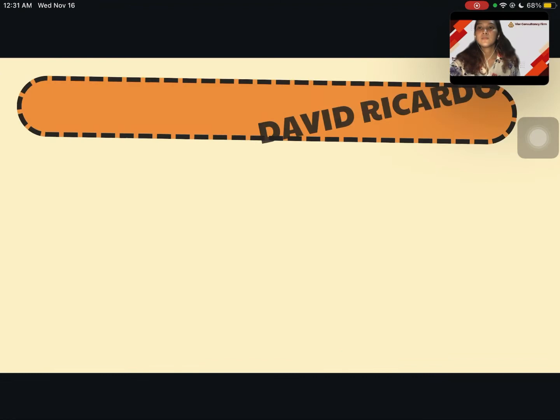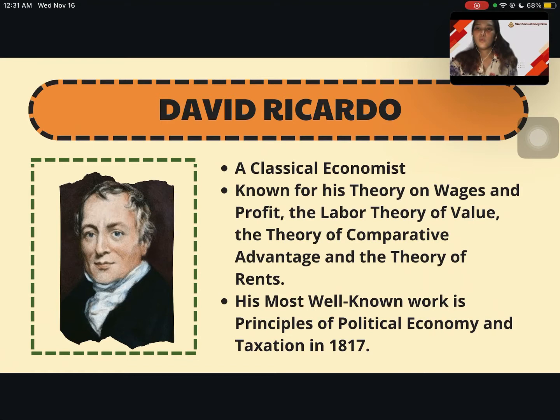David Ricardo is a British classical economist known for his theory on wages and profit, the labor theory of value, the theory of comparative advantage, and the theory of rents. His most well-known work is the Principles of Political Economy and Taxation in 1817.